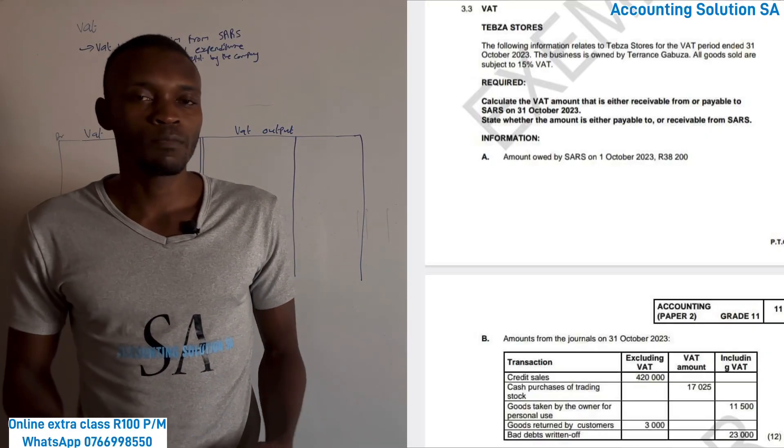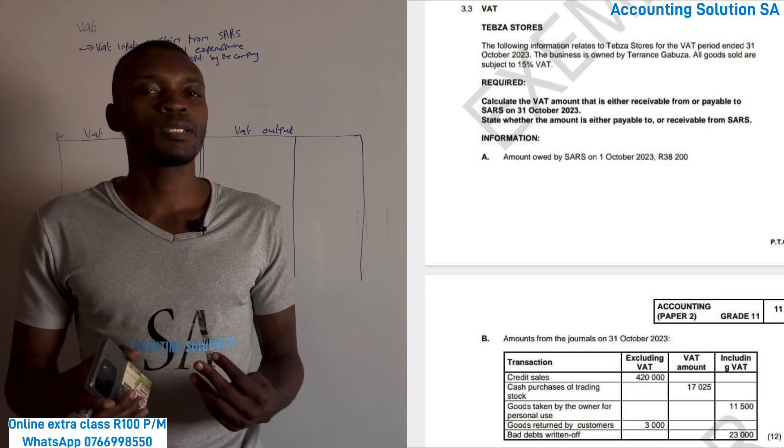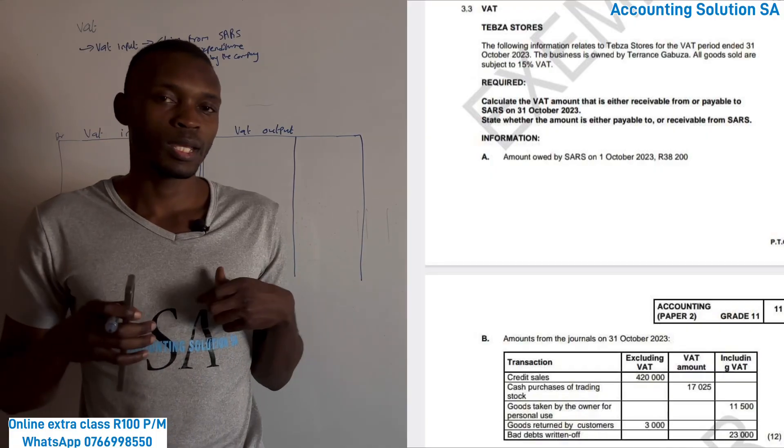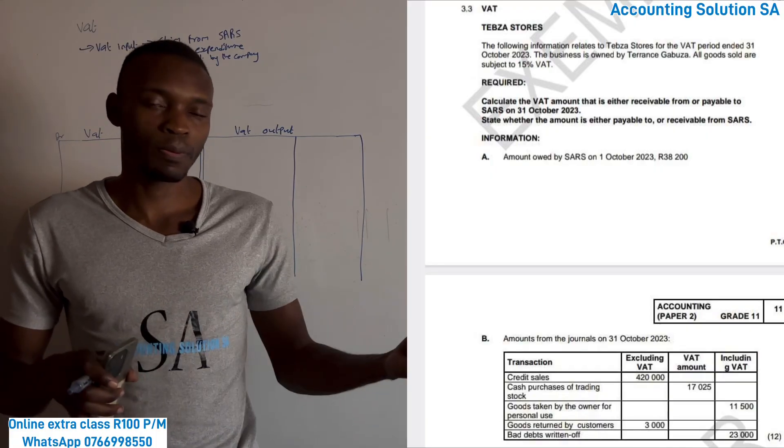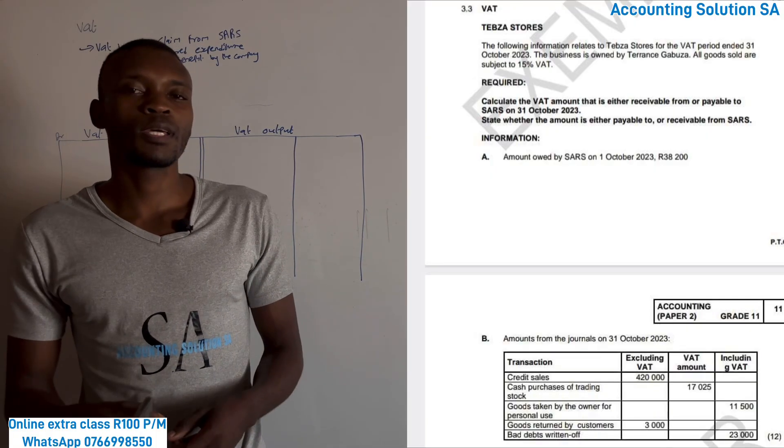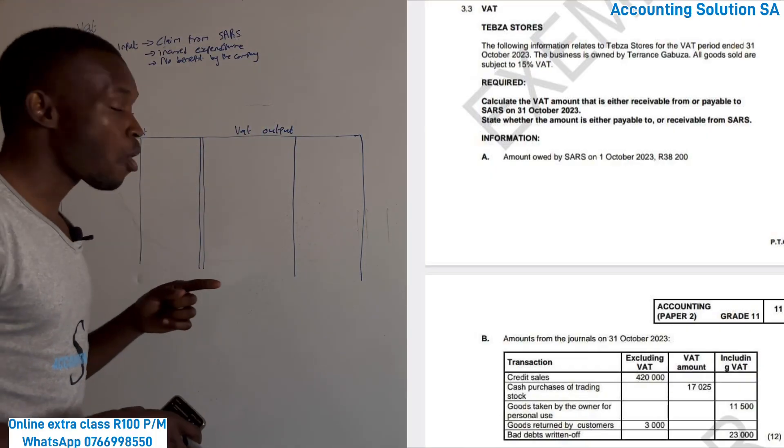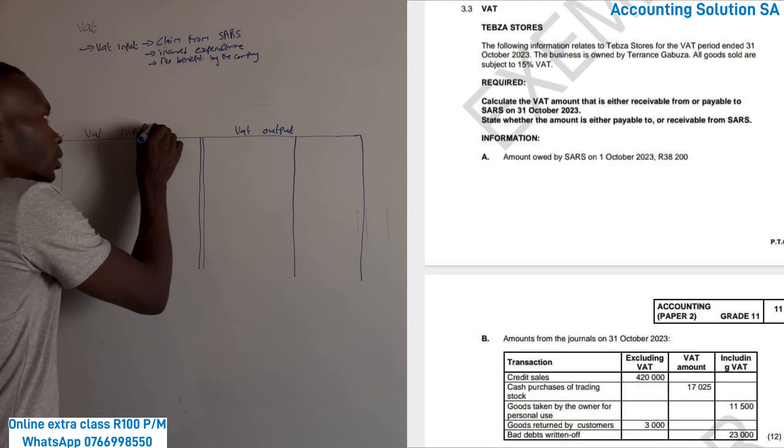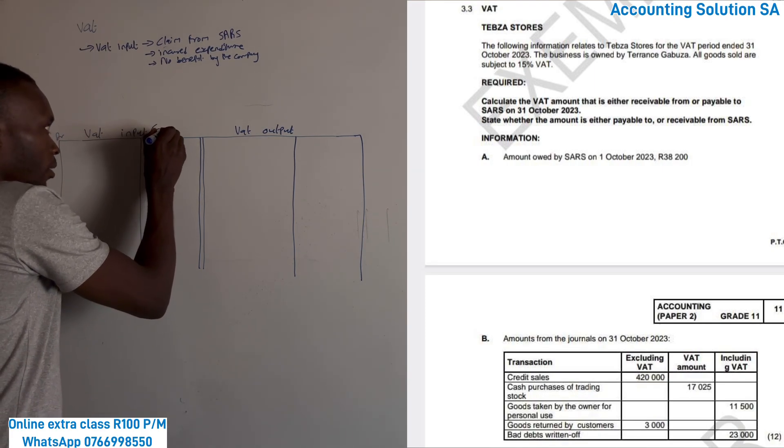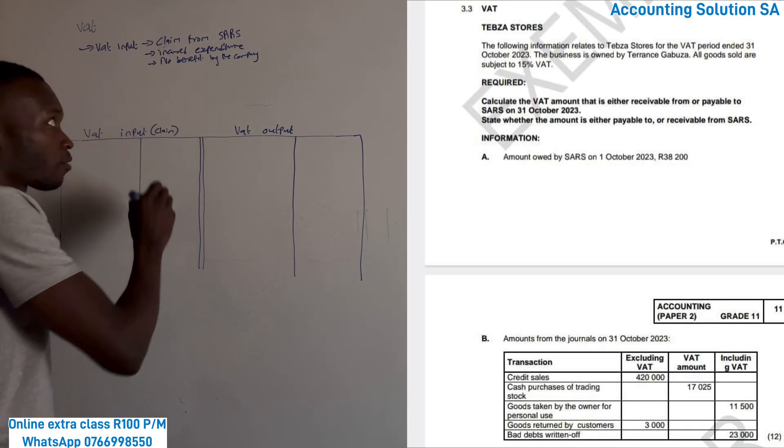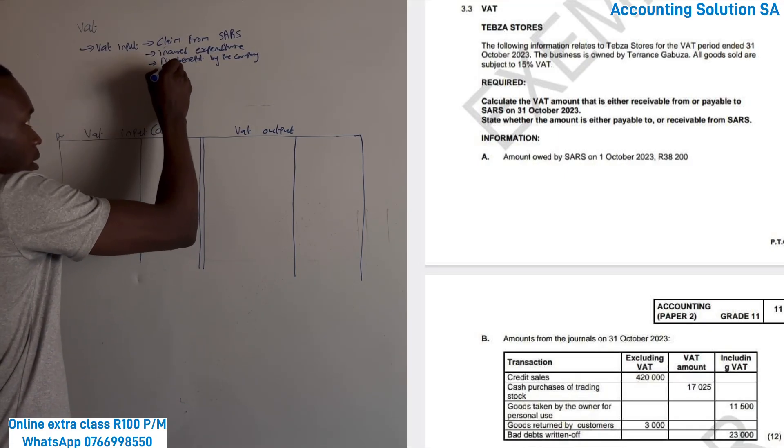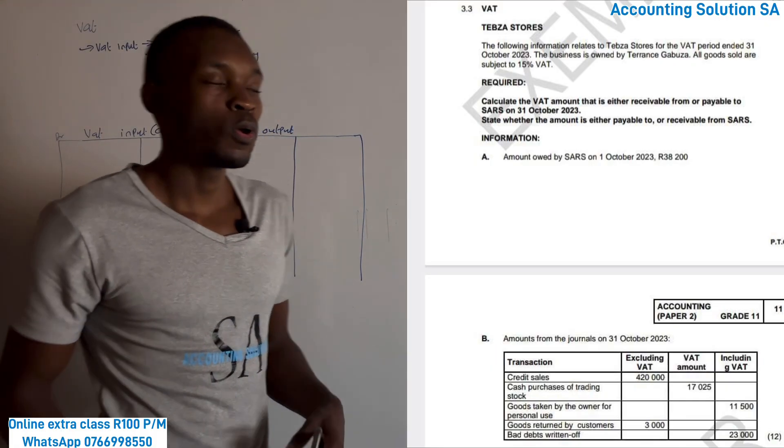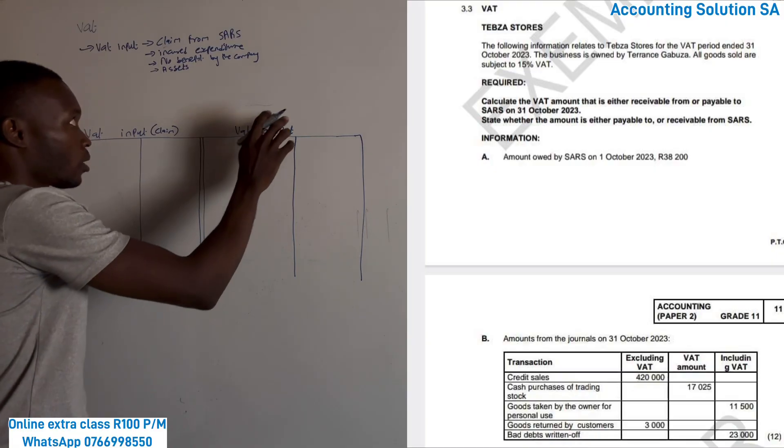So SARS allows us to do some claim when we purchase. Remember when we purchase our stock, we have to pay that company tax. So that tax that we paid, we must claim it from SARS because we are going to pay them more when we sell. That input is when we claim from SARS. In other words, this is assets to business because we are going to receive it, it's receivable, it's assets.